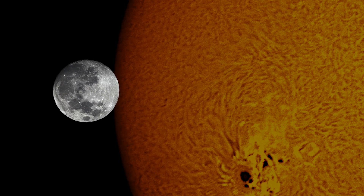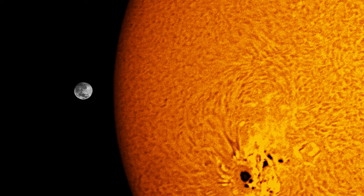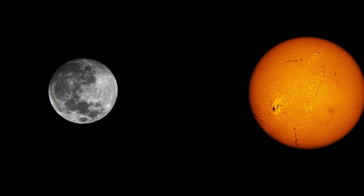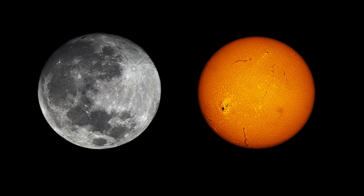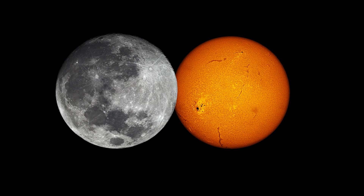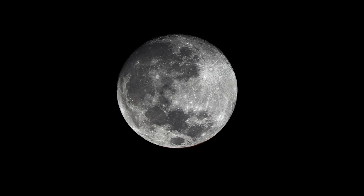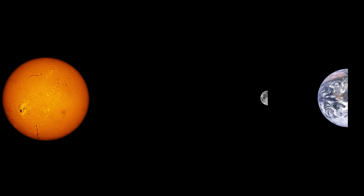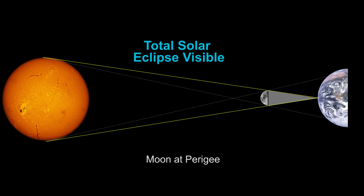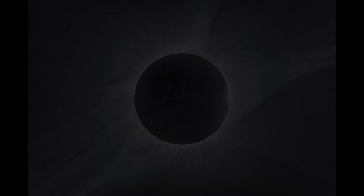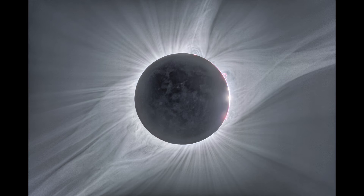By sheer coincidence, the Moon is 400 times smaller than the Sun. However, the Moon is also 400 times closer to Earth than the Sun. This perspective allows the disk of the Moon to perfectly match the angular size of the Sun. If the Moon is at perigee, the disk of the Moon will block out the entire disk of the Sun, giving a total solar eclipse.